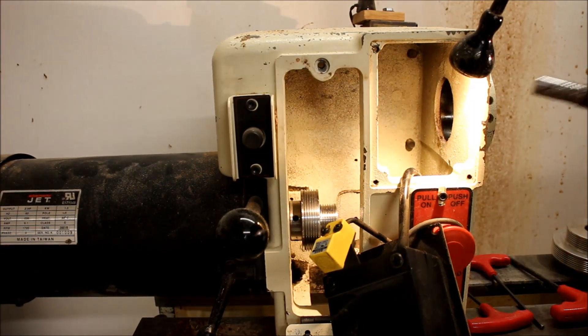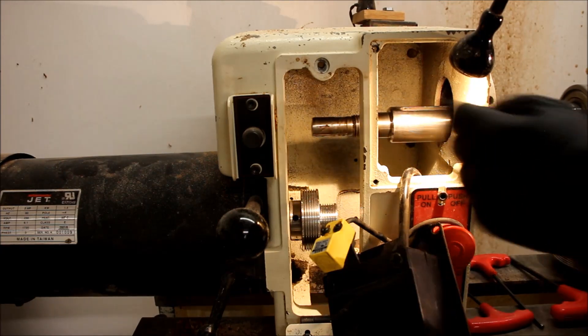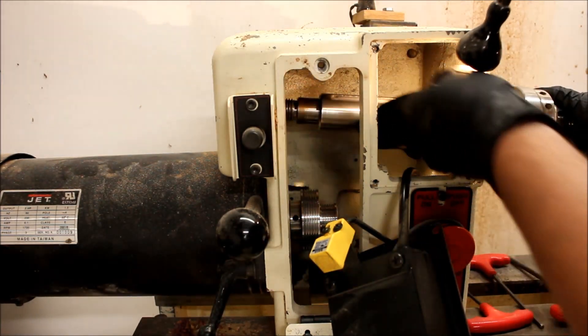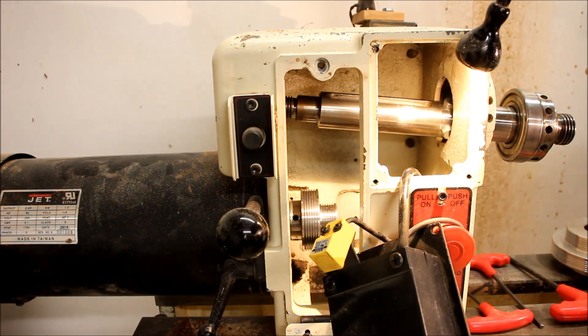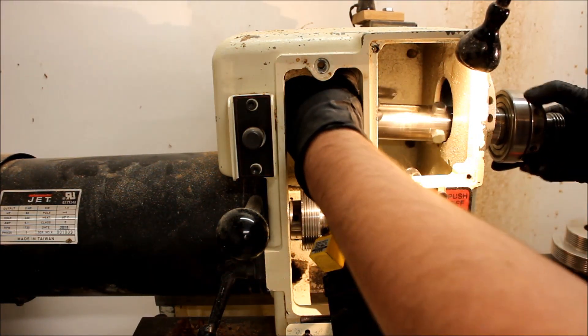So we'll go ahead and put our spindle with the large bearing installed through the hole where the housing goes. We'll take our keyway and install it back on the spindle.